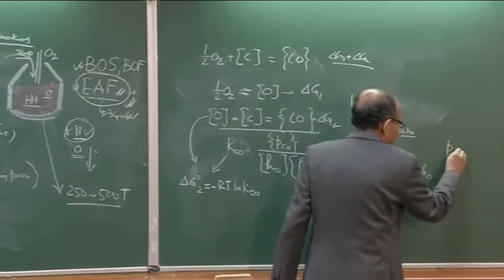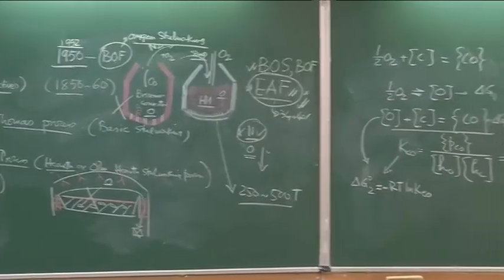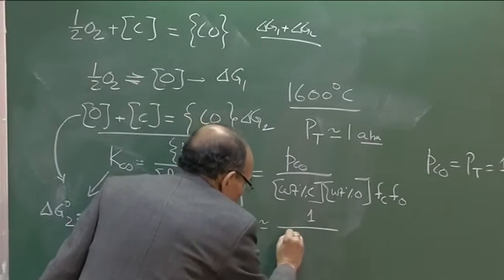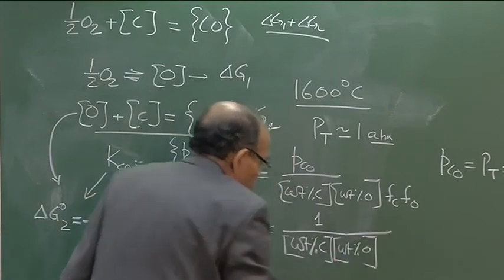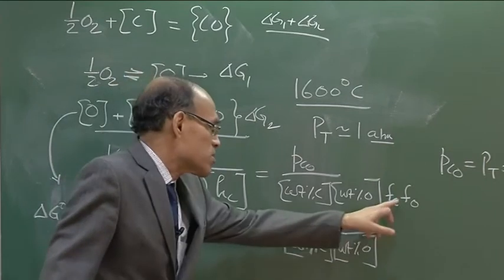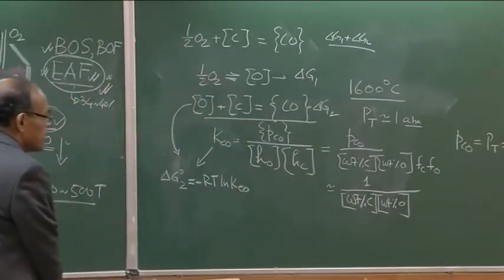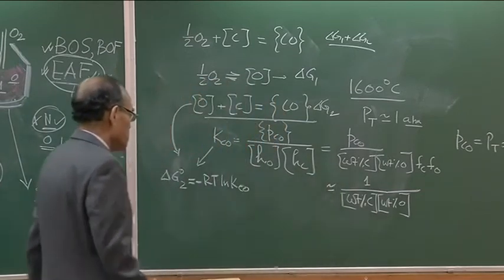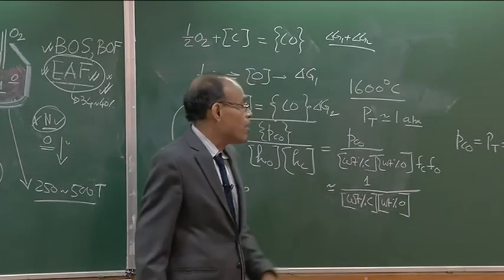We are trying to determine whether this reaction is operating close to equilibrium. If KCO is known and we assume PCO = 1 atmosphere and that activity coefficients are approximately unity (valid in the Henry's law one weight percent standard state region), then we can write: weight% C × weight% O ≈ constant = KCO / PCO. This indicates that if KCO and partial pressure are constant, the product of weight percent carbon and weight percent oxygen must also be constant.